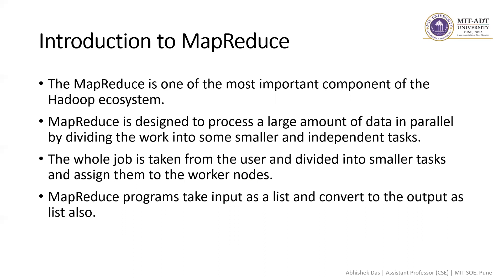The name MapReduce itself suggests it has two operations. The first word is 'map' and the second is 'reduce.' The map is the first operation, in which each document is processed while emitting one or more objects for each document. Basically, the mapper maps to the desired fields in the data collection.